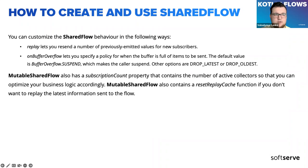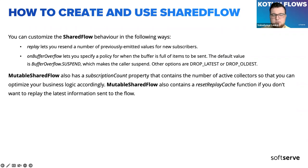We can customize SharedFlow behavior in the following ways. We can use a replay parameter, which lets us resend a number of previously emitted values for new subscribers. We also have an onBufferOverflow option, which lets us specify a policy for when the buffer is full of items — it has three options: SUSPEND, which makes the collector suspend, DROP_LATEST, and DROP_OLDEST. MutableSharedFlow also has a subscriptionCount property containing the number of active collectors, so we can optimize our business logic accordingly. MutableSharedFlow also contains a resetReplayCache function if you don't want to resend the latest information to new collectors.